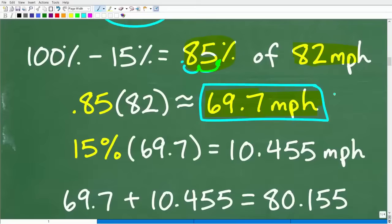So let's say, if this is the truck speed and the car is going 15% faster than the truck, well, this math should add out to 82 miles per hour, right? So let's go ahead and find 15% of this speed right here. So 15% of 69.7.